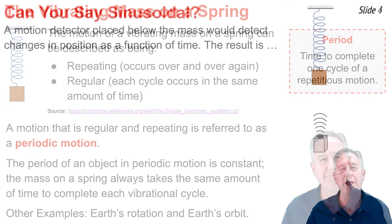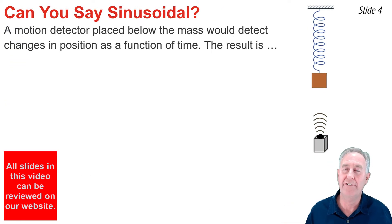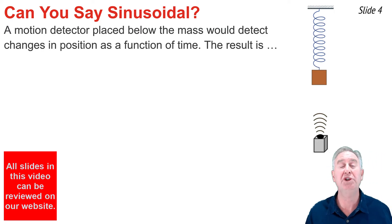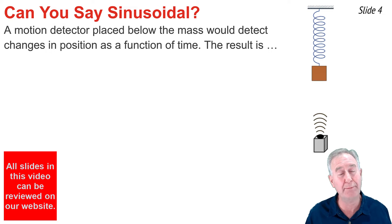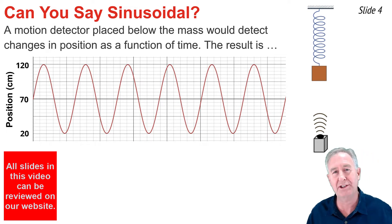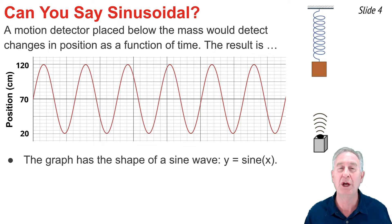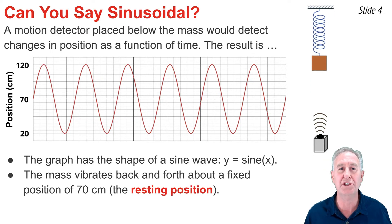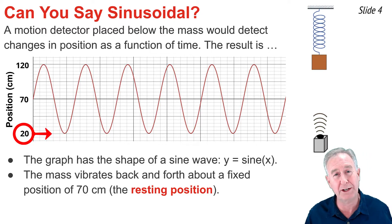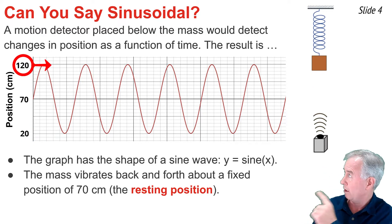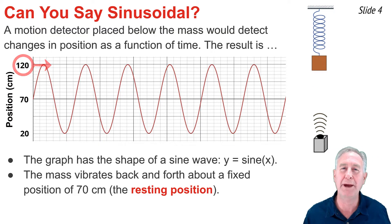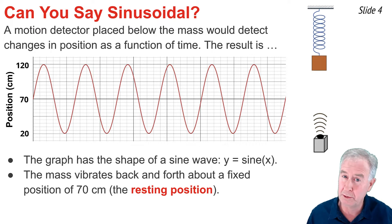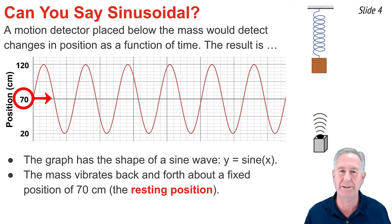If we were to place a motion detector below a vibrating mass on the end of a spring, in order to detect the position of that mass as a function of time, we would receive a plot that looks something like this. This plot has the shape of a sine wave — similar to what you'd get if you plotted y equals sine of x on your graphing calculator. In this plot, we recognize that the mass is vibrating back and forth about a fixed position. Its nearest position to the motion detector is 20 centimeters, and its furthest distance is 120 centimeters.